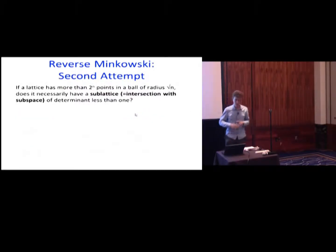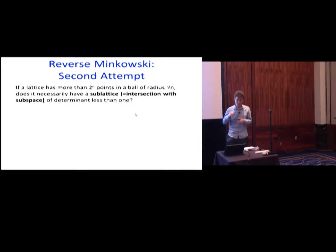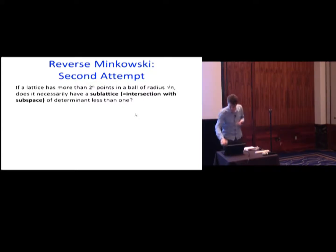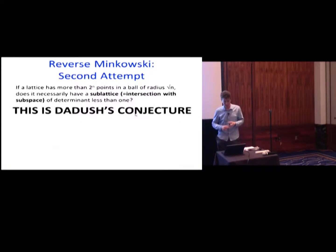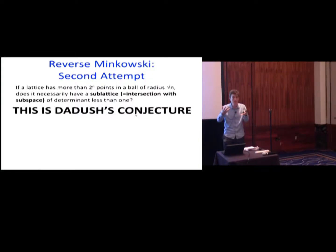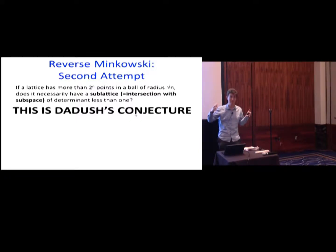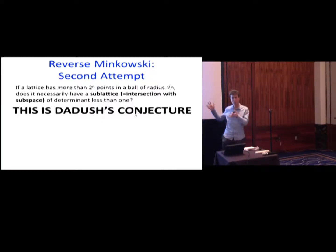Here's one thing that might be true. Assume you have a lattice with lots of points in a ball of radius √n — maybe 2ⁿ points. Does it necessarily have a sub-lattice, namely an intersection with a subspace, where the determinant is less than one? Maybe that's the right question to ask. And indeed, this is what Dadush asked. This is Daniel's conjecture: if I have lots of short lattice points, is there a way to explain it — give a witness in the sense of a subspace where it's also globally dense, where the determinant is small?